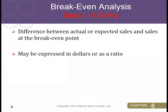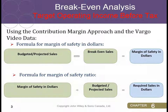We can express the margin of safety as either a dollar amount or as a ratio, and there are benefits to doing both. The formula for margin of safety in dollars is straightforward: you take your budgeted or projected sales and subtract your break-even sales. That gives you the margin of safety in dollars — the amount that your projected sales can drop before you start to lose money.